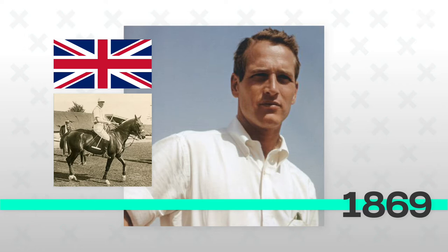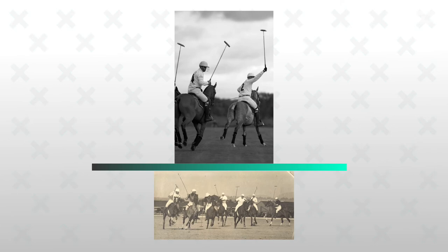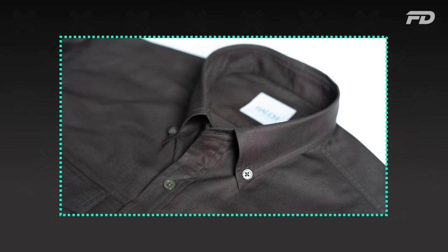Polo players would often wear button up shirts when they were charging down the field, and because of the immense wind and movement, they'd find that the collars would often flap in the wind and would sometimes impair their vision. So they needed to come up with a solution for that. And the solution they came up with, as you can guess, was to add a single button onto the collars — that would hold the collar down, keeping that formal polo look while at the same time making sure that the product was functional for the game.